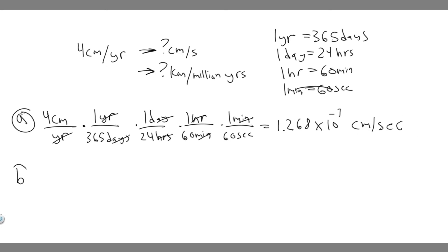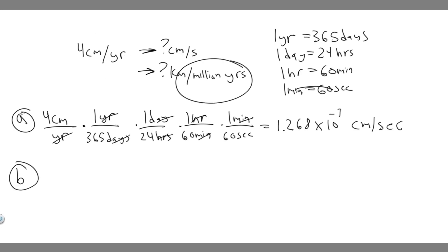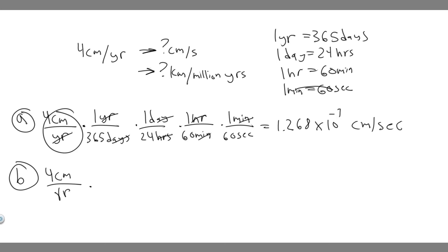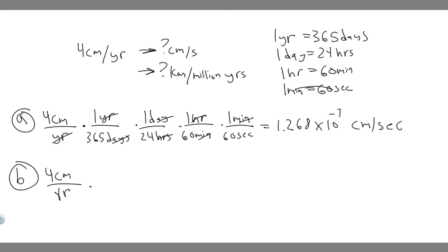Now let's move on to Part B. For Part B, we're going to convert from four centimeters per year into kilometers per million years. Unlike Part A where we didn't have to convert the centimeters, here we're going to have to convert both units — centimeters into kilometers, and years into million years.